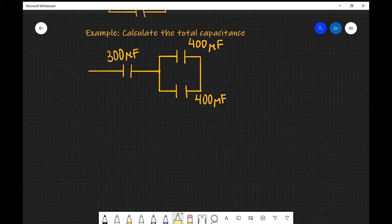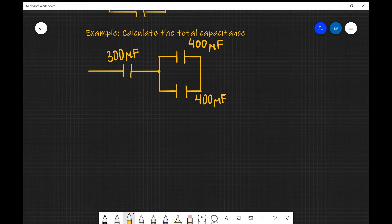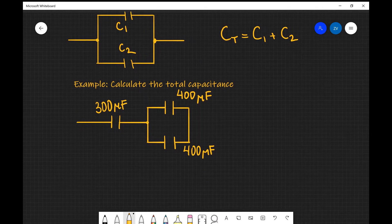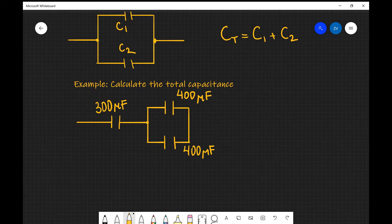Now notice that we have both a series branch and a parallel branch of the circuit. So first of all, we need to calculate the equivalent capacitance of those two capacitors which are connected in parallel. Now because they're connected in parallel, we can see that if they're in parallel, we'll just add them up.